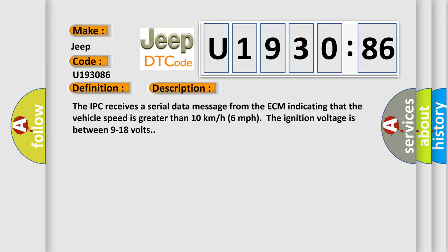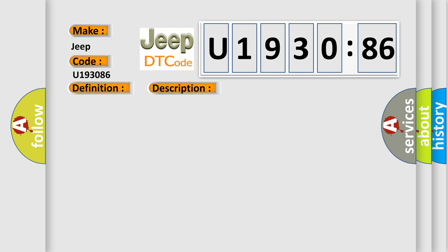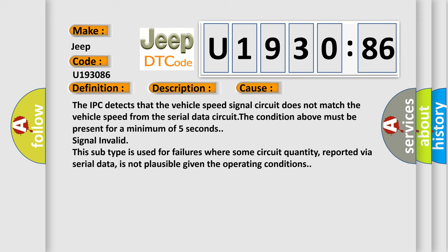This diagnostic error occurs most often in these cases. The IPC detects that the vehicle speed signal circuit does not match the vehicle speed from the serial data circuit. The condition above must be present for a minimum of five seconds. Signal invalid.